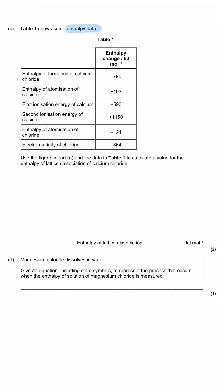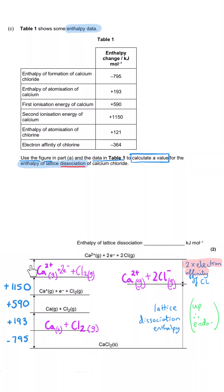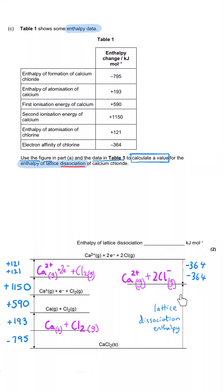Table 1 shows numerical enthalpy data for all the changes discussed. The command is to use the Born-Haber cycle and the data in Table 1 to calculate a value for the enthalpy of lattice dissociation of calcium chloride. One method is to add all the values to the cycle: enthalpy of formation = −795, enthalpy of atomisation of Ca, first ionisation energy, second ionisation energy, then two lots of the atomisation of chlorine (121 × 2), and two lots of the electron affinity of chlorine (−364 × 2).